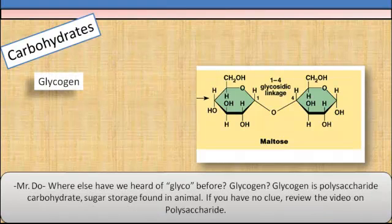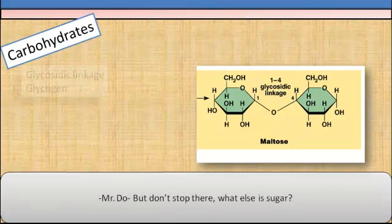What else have we heard glyco before? Glycogen? Glycogen is a polysaccharide carbohydrate, sugar storage found in animals. If you have no clue what I'm talking about, review the video on polysaccharides. But don't stop there.